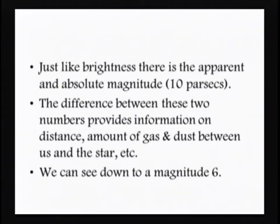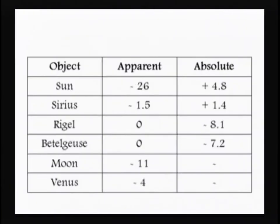With your eye, you can see down to about magnitude 6 — that's positive 6. Remember, a negative 6 would be much brighter. The more negative the number, the brighter the star. This gives some objects we're familiar with and the difference between their apparent and absolute magnitudes.